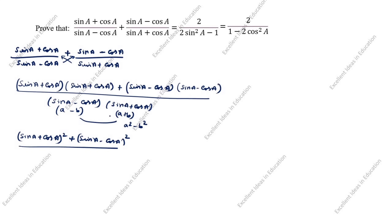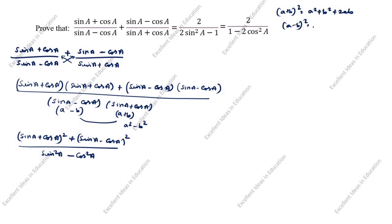Where a is sin a, so a square is sin square a, and b square is cos square a. Next, what is a plus b the whole square formula? It is a square plus b square plus 2ab. What is a minus b the whole square formula? It is a square plus b square minus 2ab.